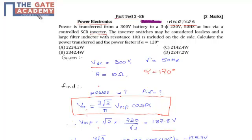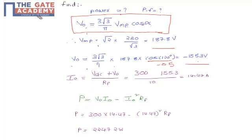The current on the DC side is given by I0 = (Vdc + V0)/RF, where RF is the filter resistance.